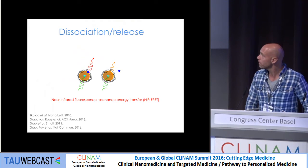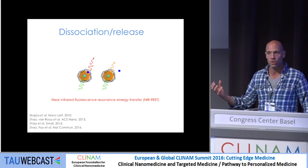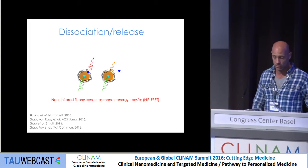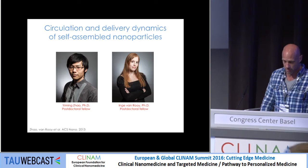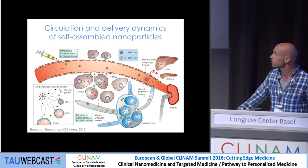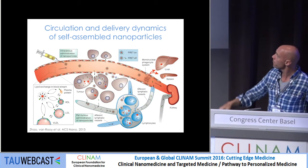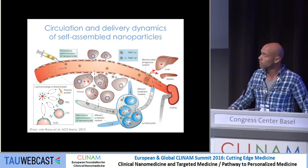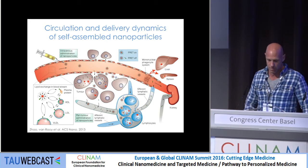One key aspect that's often not taken into account is that these nanodrugs are not bricks — they're usually self-assembled structures. Once you administer them systemically, they don't only accumulate in the tumor, but interact with liver and spleen, and while circulating they can interact with plasma constituents like lipoproteins and plasma proteins. This really has to be taken into account.